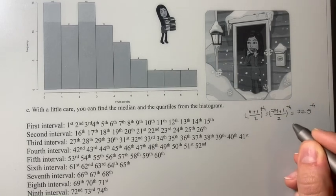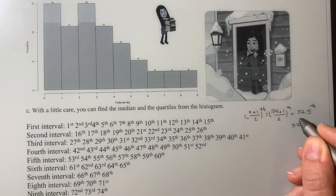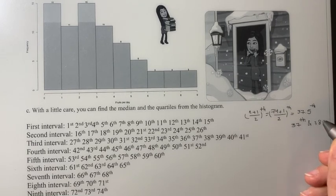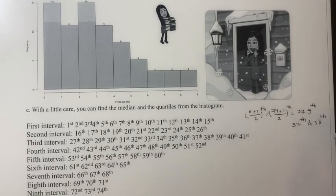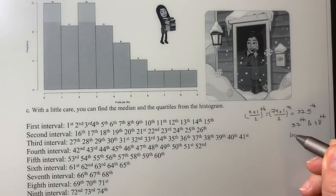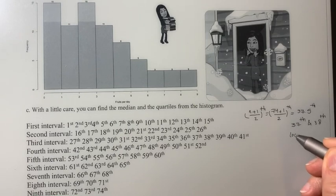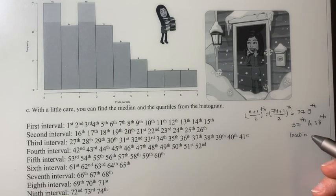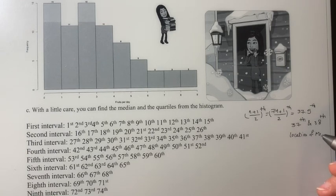So the median is the individual between this one and this number. This is the location. Okay, so now we know the location of the median.